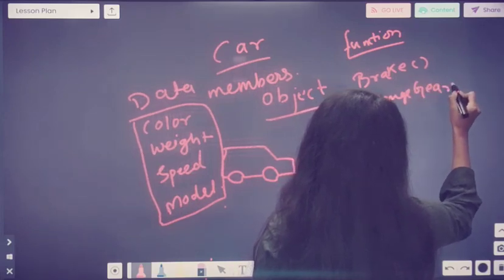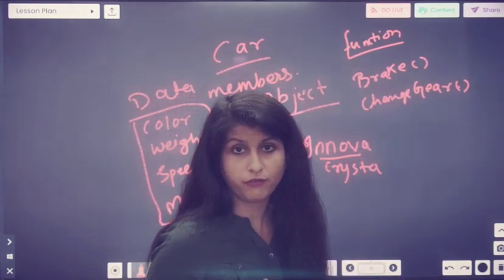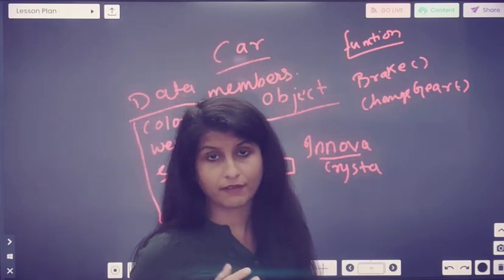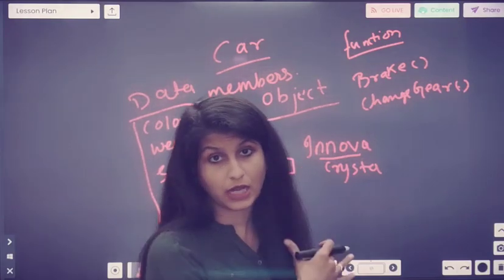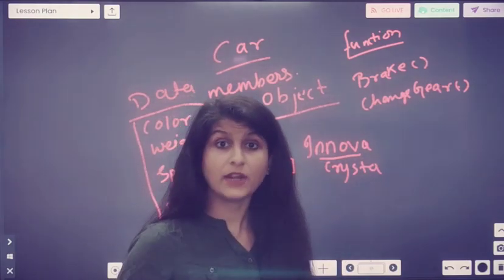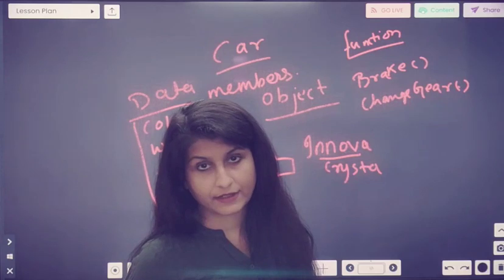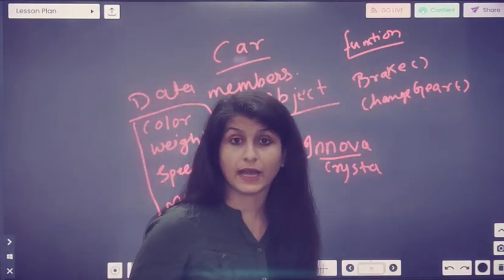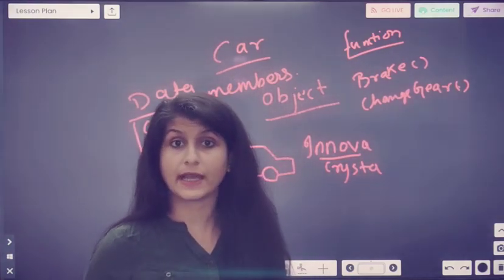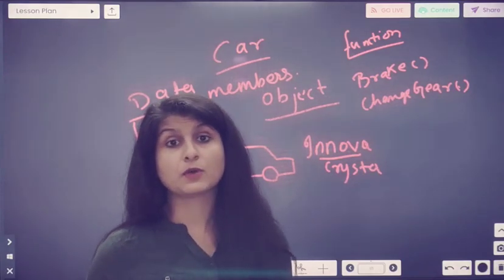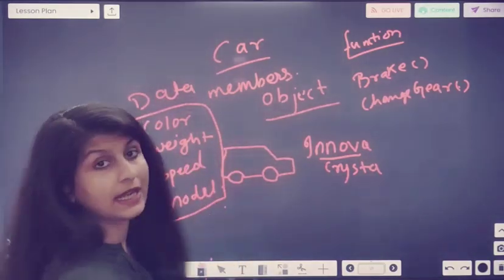Then there will be a change gear function. Apart from that, all the functions your car has will be included here. So this car — this object — is an object of the vehicle class or car class. In it, we have data members like color, model, and all those things, and we also have functions.